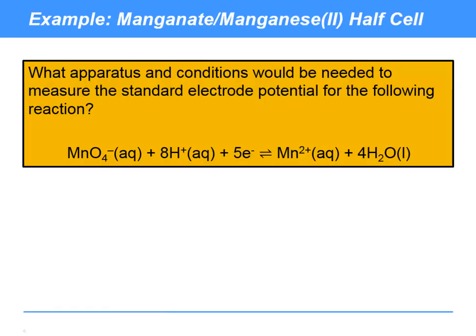Now one for you to try. What apparatus and conditions would be needed to measure the standard electrode potential for the following reaction? MnO₄⁻(aq) + 8H⁺(aq) + 5e⁻ ⇌ Mn²⁺(aq) + 4H₂O(l). Pause the video and see if you can work that out.